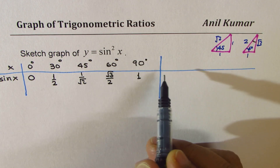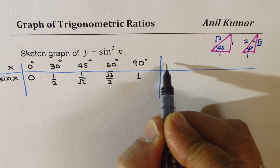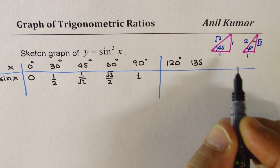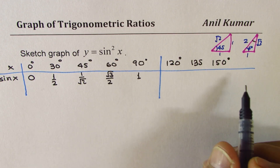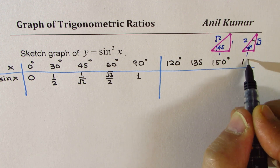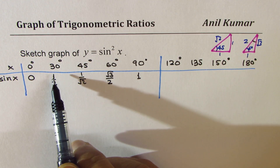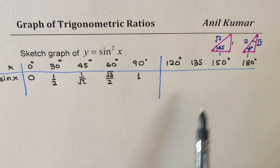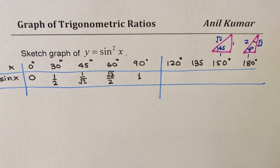Now we have to repeat these values in quadrant 2. So the next angle will be 90 plus 30, which is 120 degrees. Then you can add 45, which is 135 degrees. And then add 60, so that gives you 150 degrees. And then 180 degrees. All these are positive values. The sine curve is very symmetric, so you can fill up these values and then draw the sine function. I'm leaving this for you to do. I'll continue with sine square x.